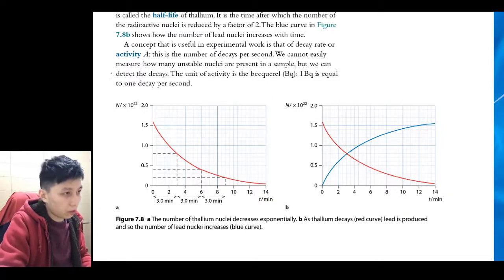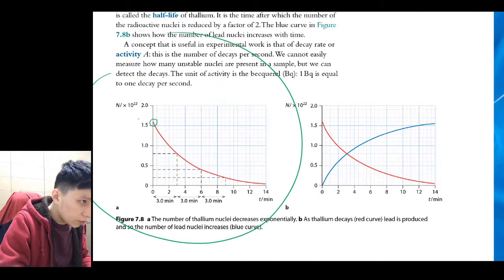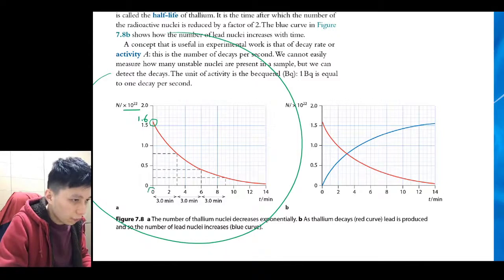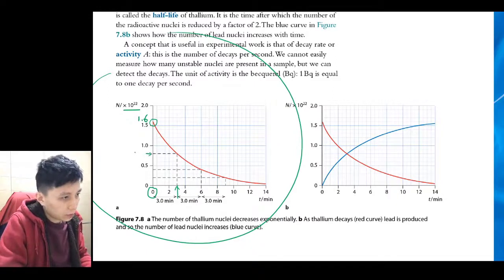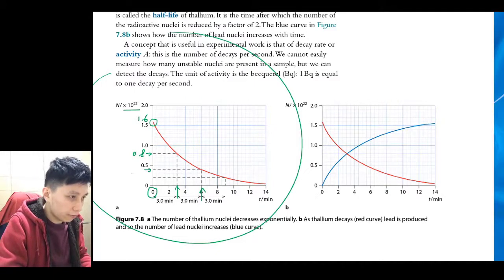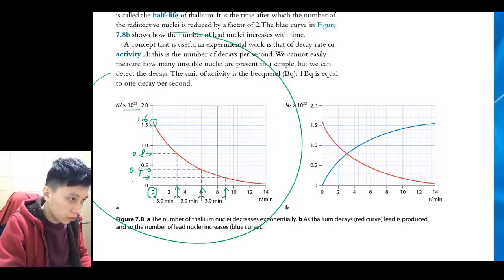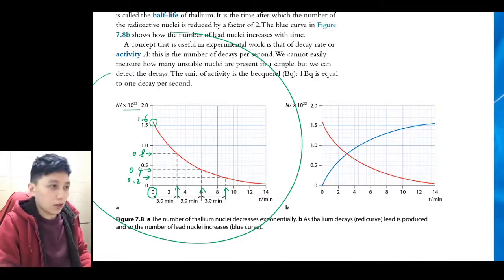Ok, so here we've got a graph and we can see at the beginning you have 1.6 with that particular unit for the very first instance. When you have 3 minutes past you have 0.8. When you have 6 minutes past you have 0.4 remaining. When you have 3 more minutes which is 9 minutes in total you have 0.2 remaining and so that is half-life.